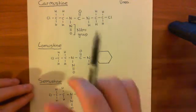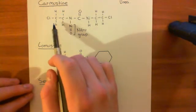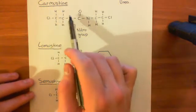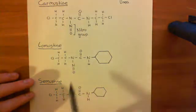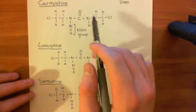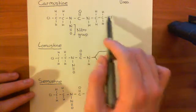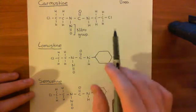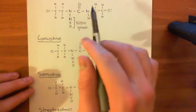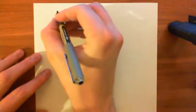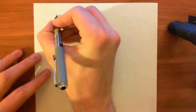We'll generalise slightly. We'll assume that we are working with a nitrosourea that has the chloroethyl group here, has the nitrosourea portion — well, they all do have the nitrosourea portion — and then we'll put an R group here to generalise. So that umbrellas carmustine, lomustine, and semustine all together. Let's have a look at this general nitrosourea.